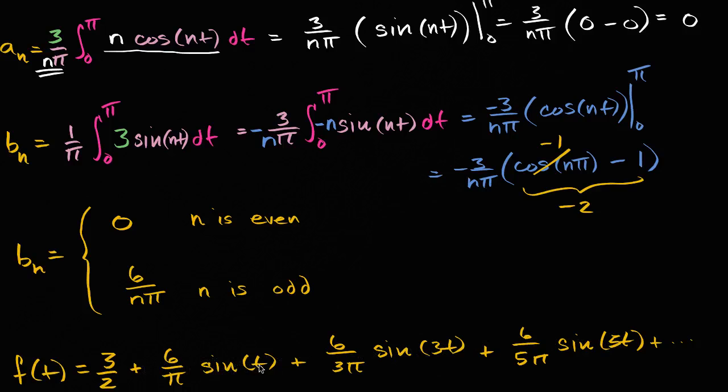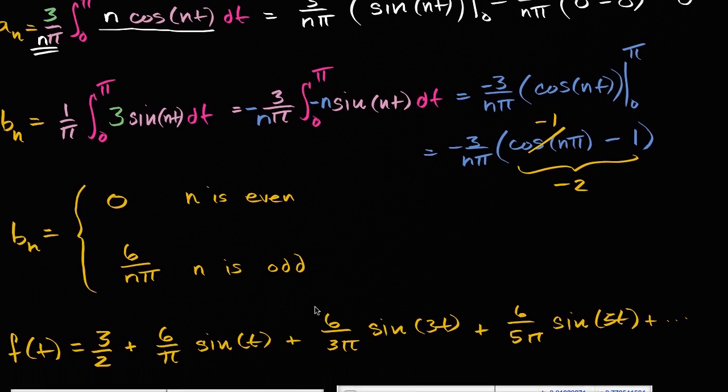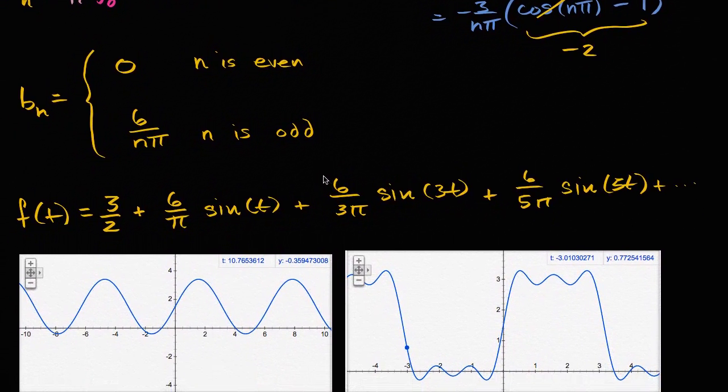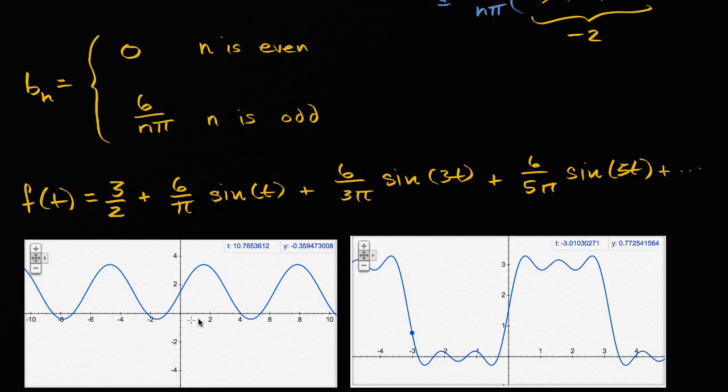So three halves plus six over π sine of t, plus six over 3π sine of 3t, plus six over 5π sine of 5t, and so on and so forth. And so you might be curious, what does this actually look like? You can type these things into Google and it will graph it for you.